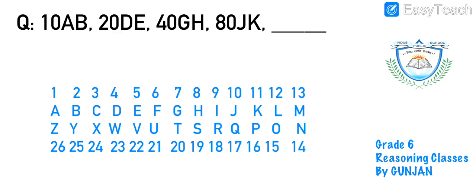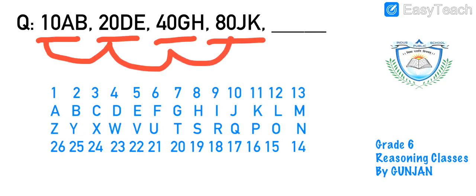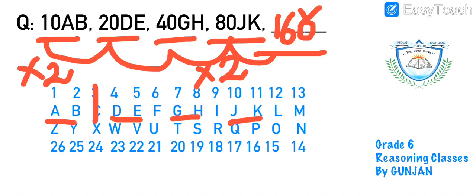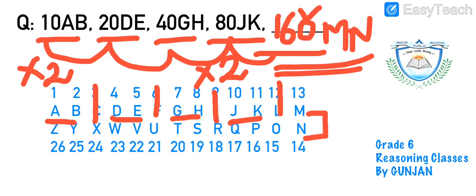Next question: 10ab, 20de, 40gh, 80jk. The numbers 10, 20, 40, 80 are each multiplied by 2, so the next number is 160. For the alphabets: a b, d e, g h, j k — one letter is skipped between each pair. Skipping one letter after k gives us m n. The complete answer is 160mn.